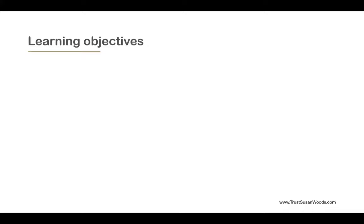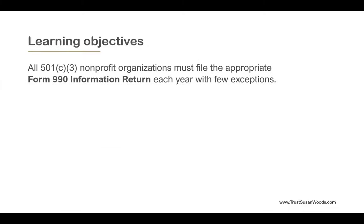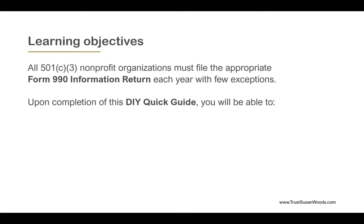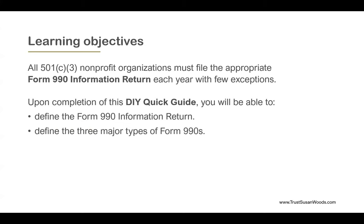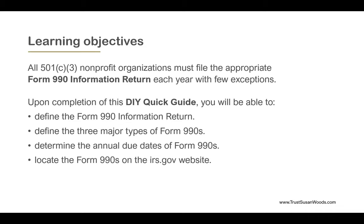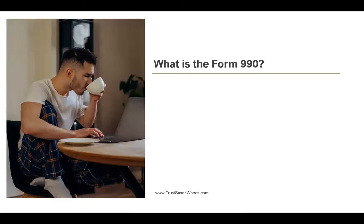Here are the learning objectives. All 501c3 nonprofit organizations must file the appropriate Form 990 information return each year with very few exceptions. Upon completion of this do-it-yourself quick guide, you will be able to define the Form 990 information return, define the three major types of Form 990s, determine the annual due dates of Form 990s, and locate the Form 990s on the irs.gov website.